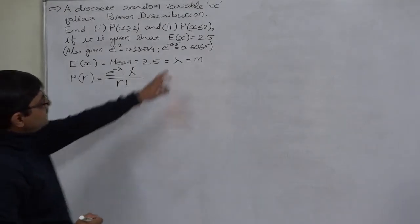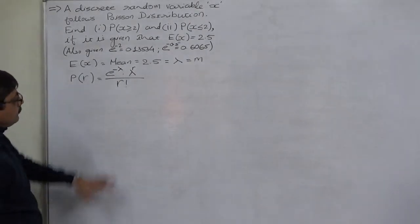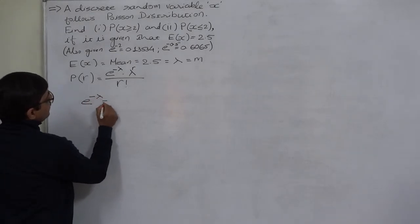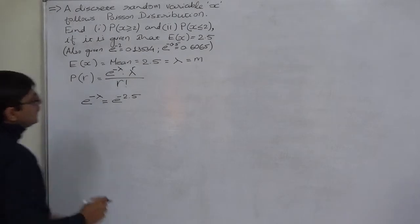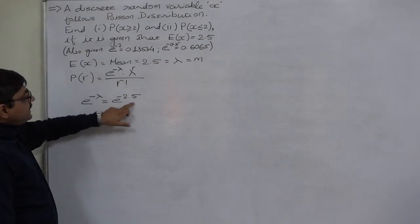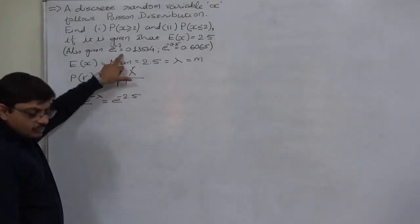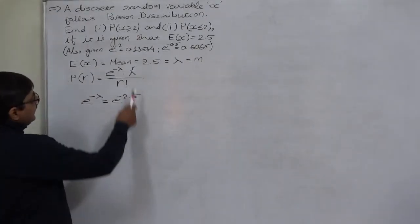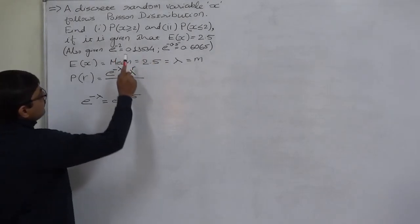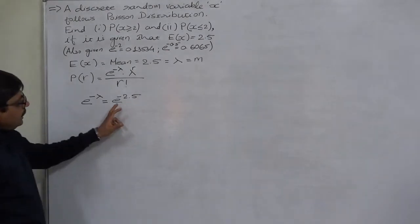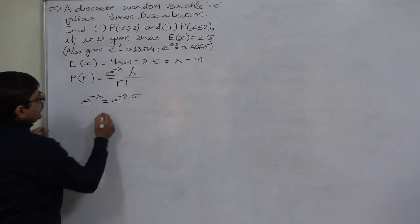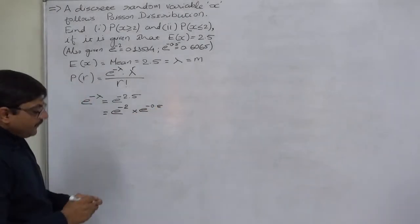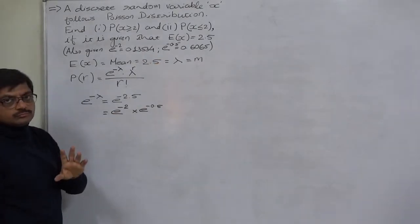First, to substitute values in this formula, we need the value of e^(−mean), which here is e^(−2.5). We have not been given e^(−2.5) directly, but we do have e^(−2) and e^(−0.5). From our school days we know that when multiplying with the same base e, the powers are added — so to obtain e^(−2.5) we need to multiply these two values.